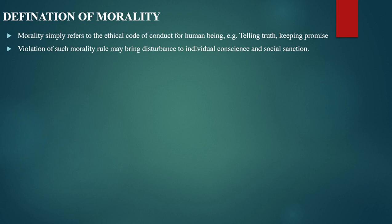Let us now head to another subtopic: morality. Morality can simply be referred to as an ethical code of conduct for human beings. For instance, telling the truth and keeping promises are ethical. Violation of such morality rules may bring disturbance in the form of social sanction.